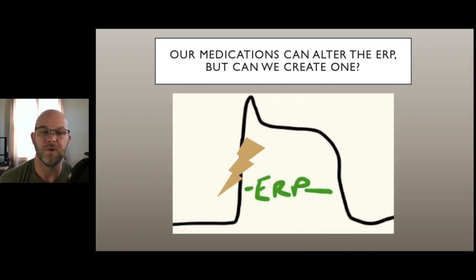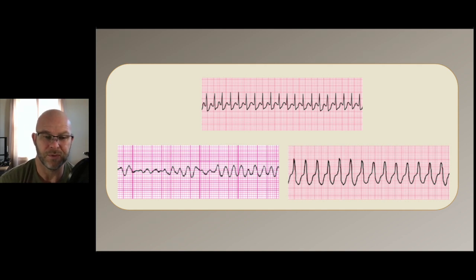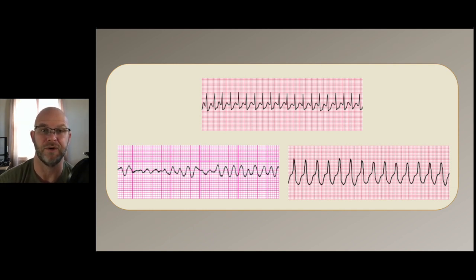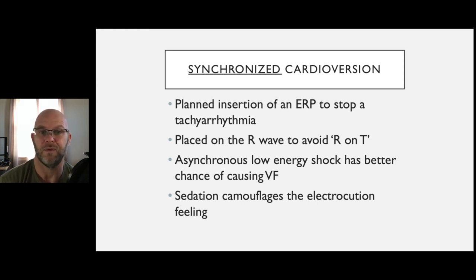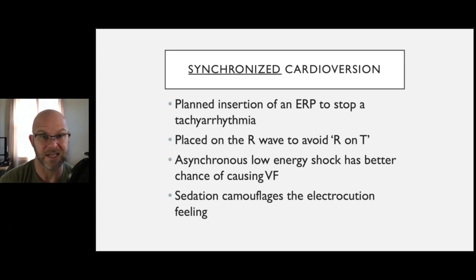There are some drugs and things that can put in effective refractory periods, but what can we do about that? We can do it with electricity. Here are some rhythms where we'd use synchronized cardioversion or defibrillation — really what we're talking about is an effective refractory period that we're going to place into that rhythm to take care of the patient. The synchronized part goes with unstable tachycardia. We want to synchronize it because that will prevent energy from being delivered on the T wave. The R-on-T phenomenon is how we used to induce V-fib to test defibrillators in the cath lab.